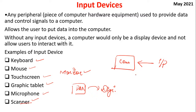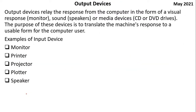The reverse is output devices. Examples of input devices are: keyboard, mouse, touchscreen, graphic tablet, microphone, scanner. Output devices are the opposite — when the computer wants to display the result, it uses output devices.